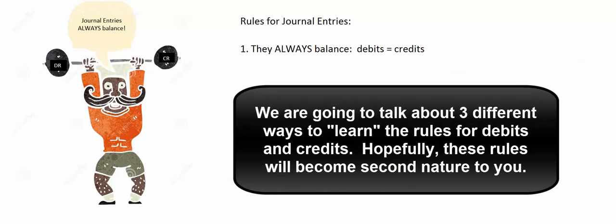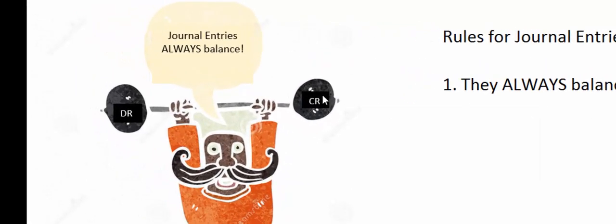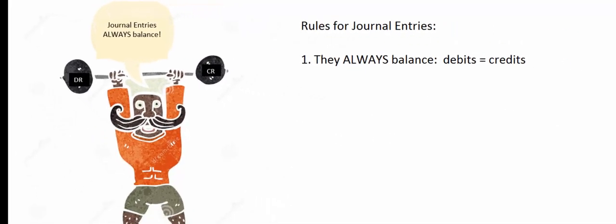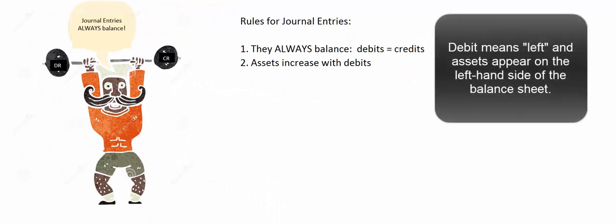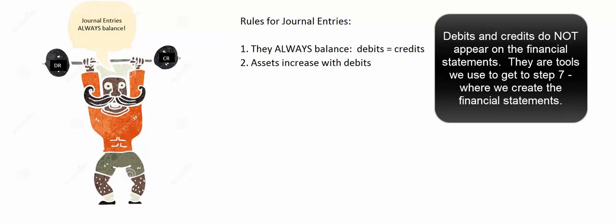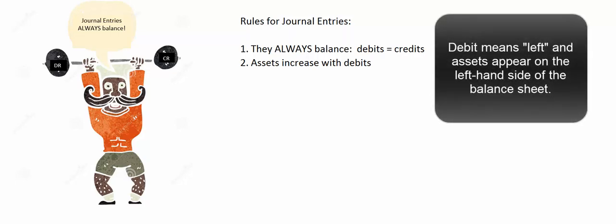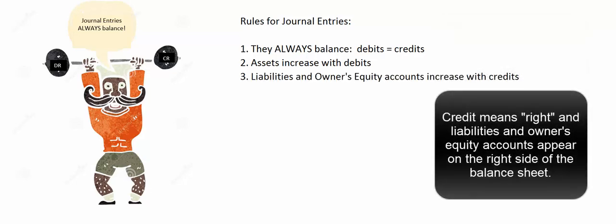We're going to talk about three different ways to learn the rules for journal entries, but however you learn it initially will become irrelevant — it becomes second nature after a few practice runs. First rule: journal entries always balance — the dollar amount of debits equals the dollar amount of credits. Second rule: assets increase with debits. That's easy to remember because debit means left and assets are on the left-hand side of the balance sheet. Liabilities and owner's equity accounts increase with credits, because they're on the right-hand side of the balance sheet and credit means right.